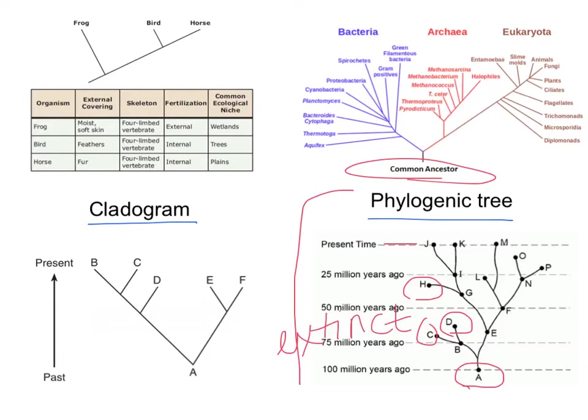You can base relationships on the branching points. For instance, the most recent common ancestor for L and M would be F. The most recent common ancestor for J and K would be I. A common ancestor of J and M, you'd have to come all the way back to E. So you're just looking for your branching points.